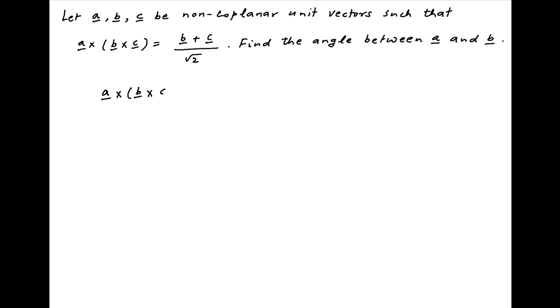We are given the vector equation. The triple product of vectors a, b, and c is equal to b plus c upon root 2.